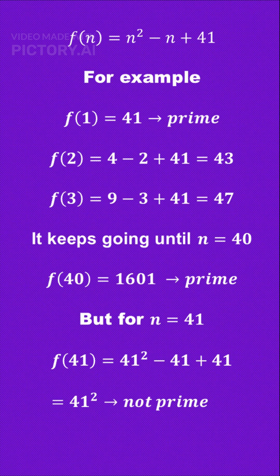For example, when n = 1, the result is 41, a prime number. At n = 2, it gives us 43, another prime. This pattern continues beautifully until n reaches 40, where the result is 1601, still a prime.